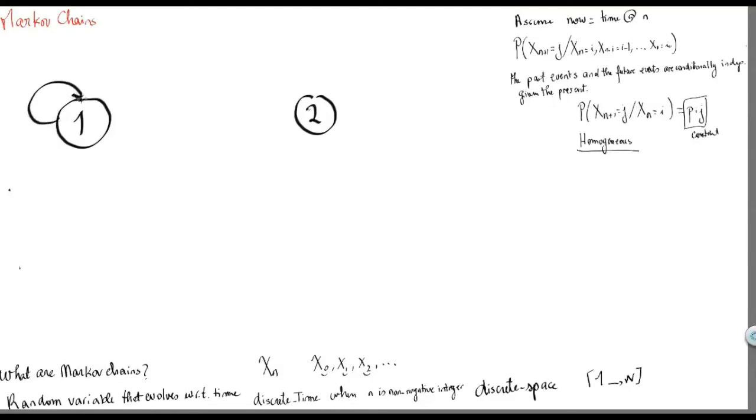For example, given that I'm in state 1, I will remain in state 1 with probability 1/3, and I will shift or my system would transition to state 2 with probability 2/3. Let's assume that this system, whenever it exists in state 2, will always shift to state 1 with probability 1.